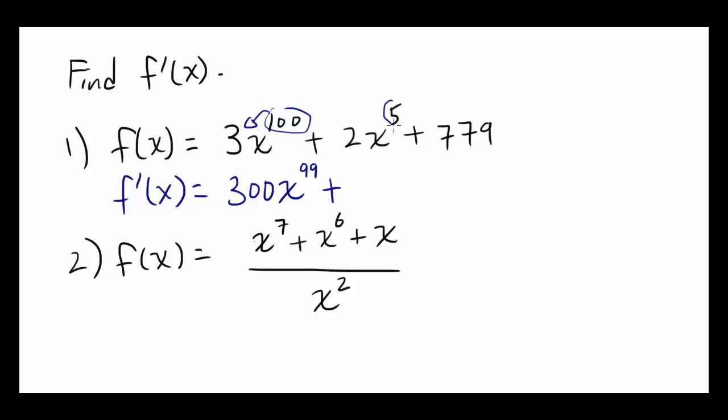2x to the 5th, you're going to bring this 5 down. 2 times 5 is 10, and 5 minus 1 is 4.